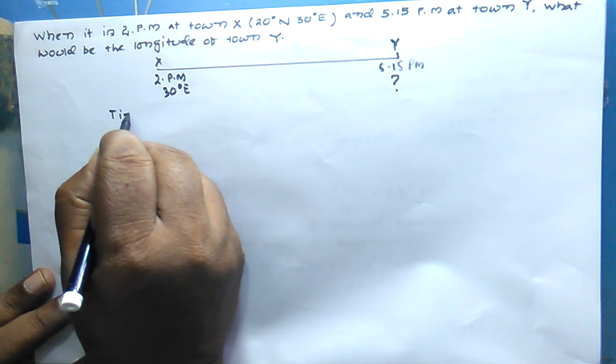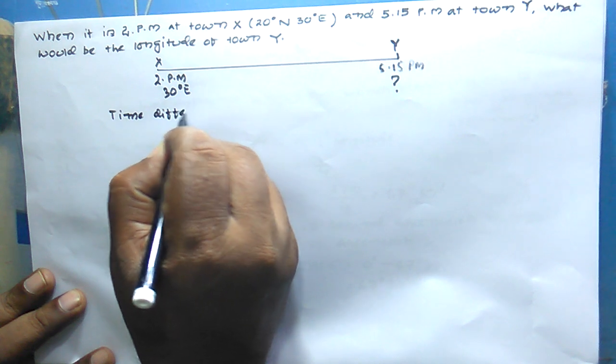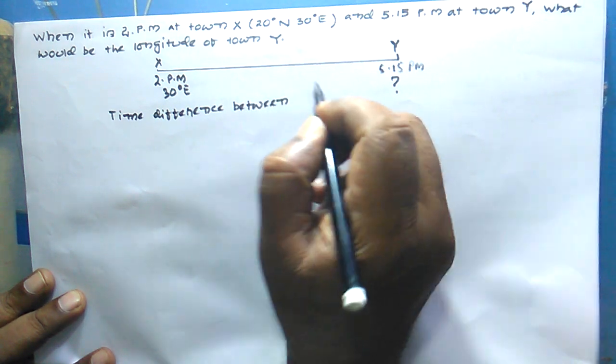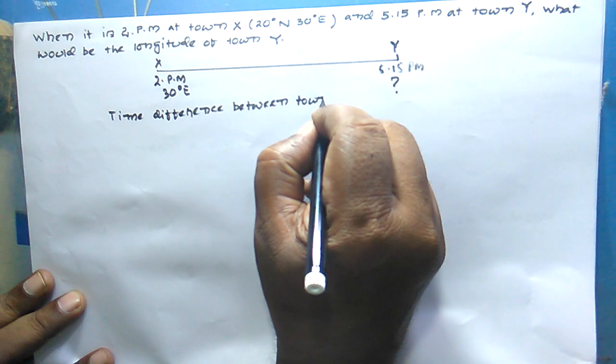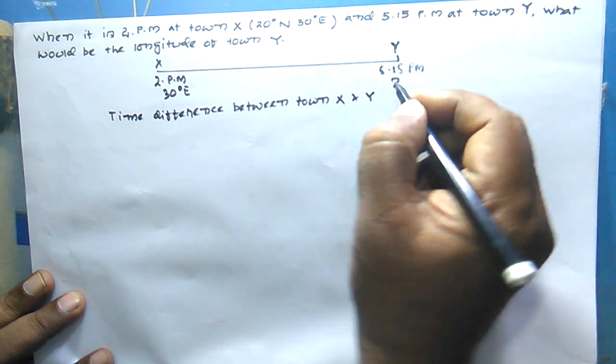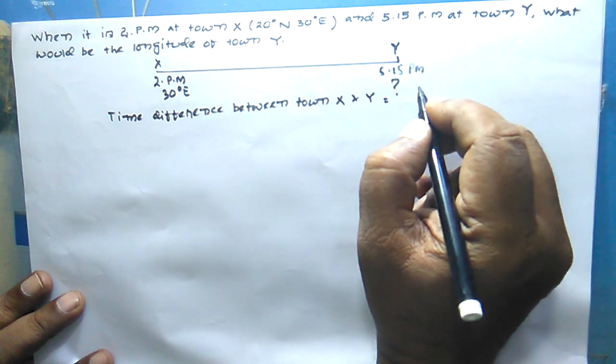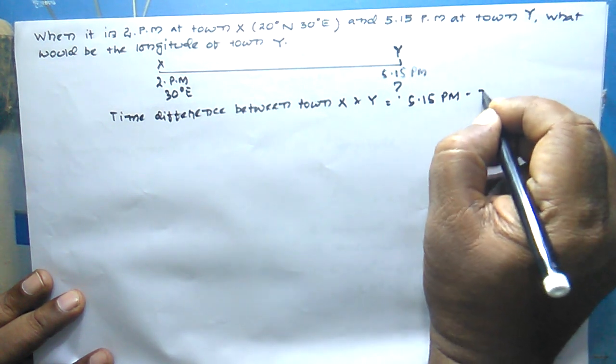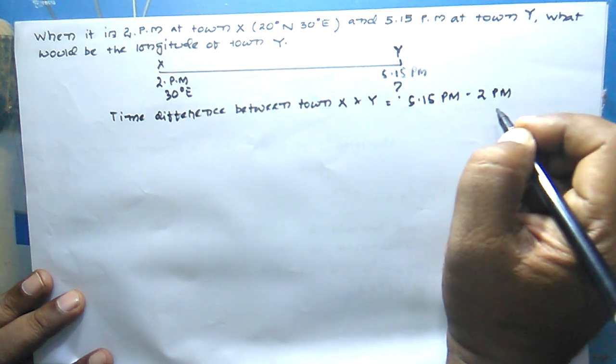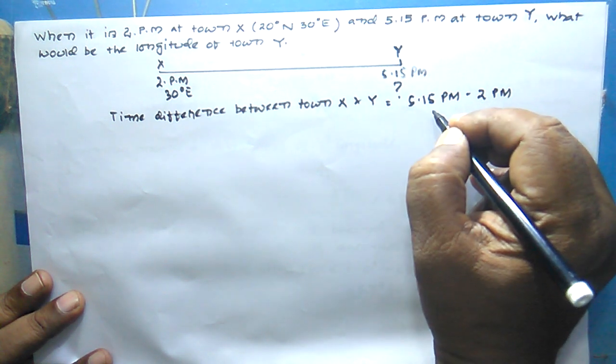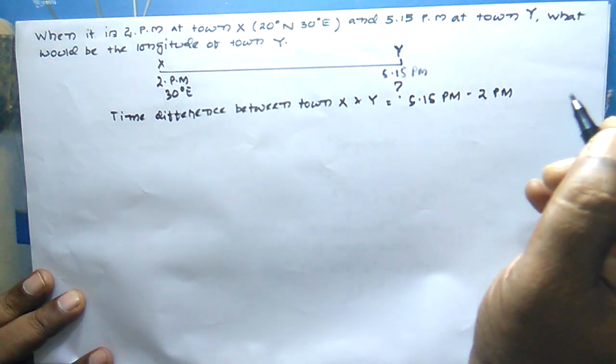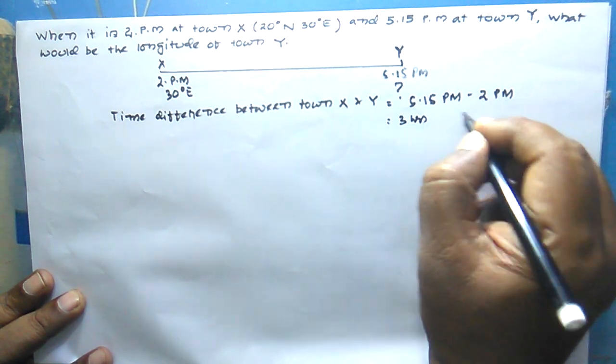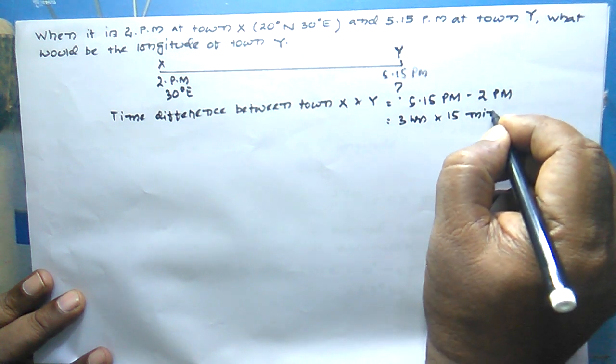Time difference between town X and Y is equal to 5:15 p.m. minus 2 p.m. Going from the earlier time to the later time: 2, 3, 4, 5. That is 3 hours and 15 minutes.